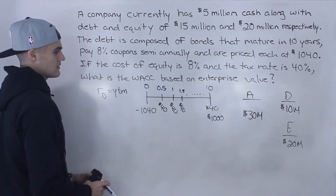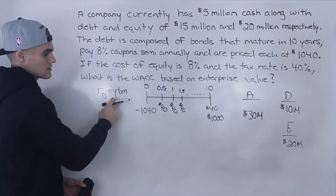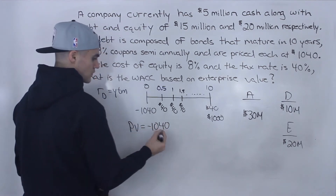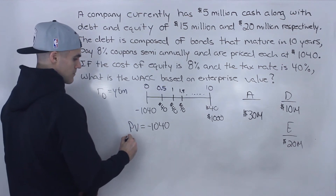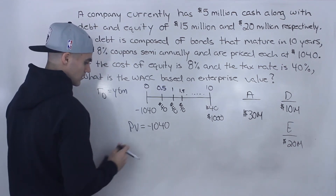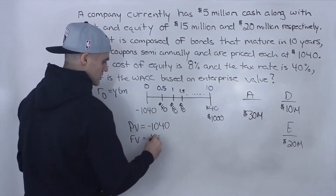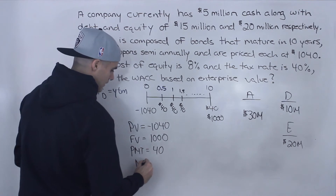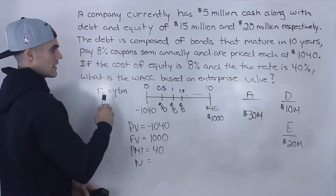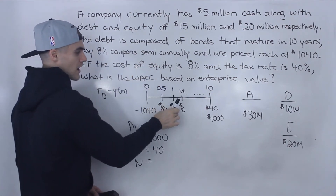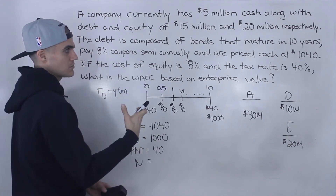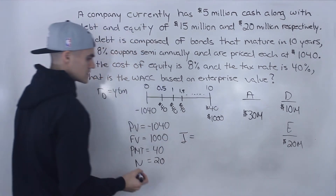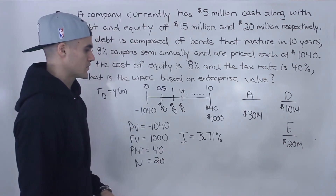We can calculate the semi-annual yield to maturity with a financial calculator. Input: PV = negative $1,040, FV = positive $1,000, PMT = positive $40, N = 20 (10 years times 2 for semi-annual payments). Solving for I, you get 3.71%. Remember, PMT, N, and I must always be the same frequency — since payments are semi-annual, this 3.71% is a semi-annual rate.